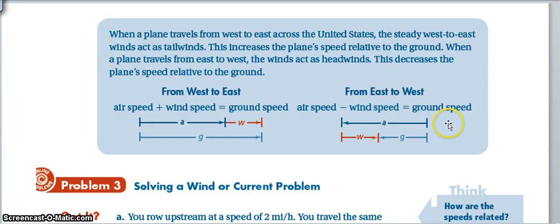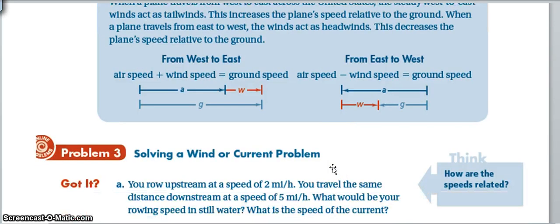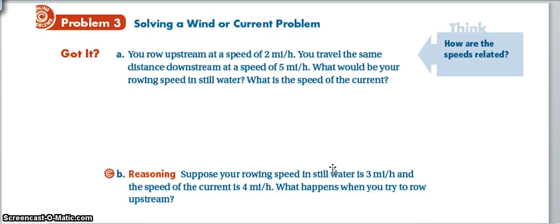So our airspeed is actually, if our airspeed was like 90 miles an hour, but our wind speed was 30 miles an hour, our ground speed that we would actually be traveling would only be 60 miles an hour. So there's a speed that you have to travel to actually just stay in place and not go anywhere. So check out this problem dealing with wind or current problems.